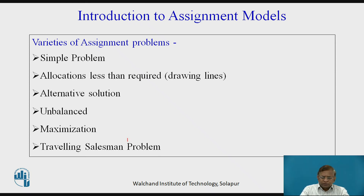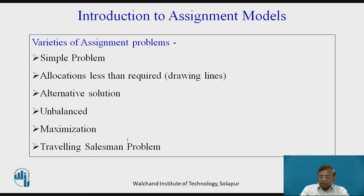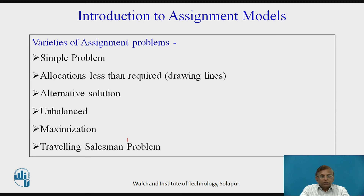The unbalanced case occurs when the number of rows and columns do not match. The problem must be converted and balanced before applying the regular solution procedure. For maximization problems — where the data represents profit, revenue, income, or sales — one small change is made at the beginning of the procedure, since the basic assignment model procedure is designed for minimization.